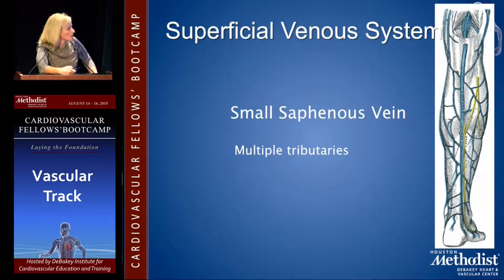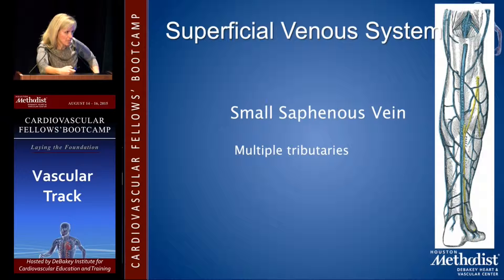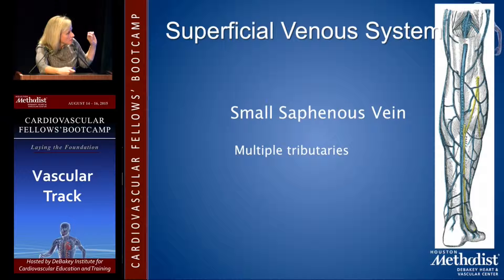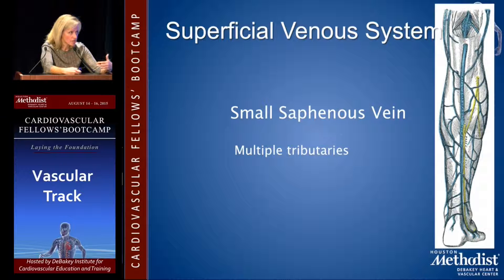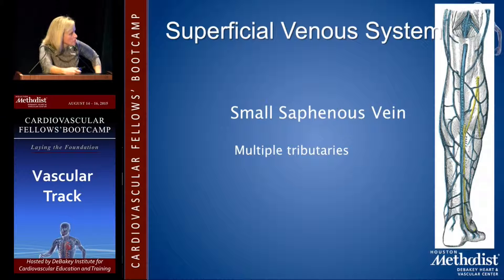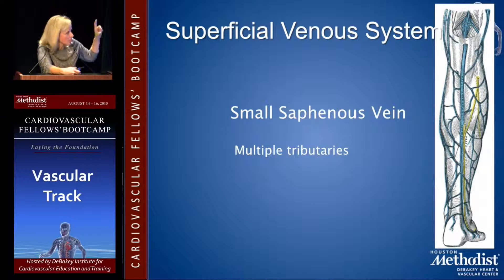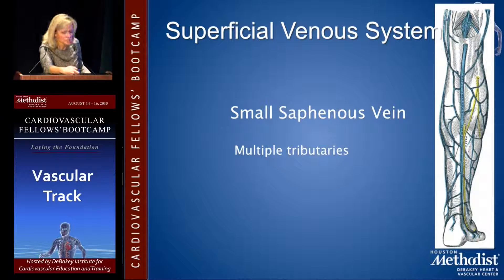The small saphenous vein starts lateral and posterior to the lateral malleolus and extends up the posterior aspect of the calf. For the first two-thirds of the calf, it runs with the sural nerve, then as it goes deep to penetrate the fascia it separates from the sural nerve. This is significant for treatment: when treating the small saphenous vein you must be careful not to injure the sural nerve. We usually treat the top third of the small saphenous vein, which is safely away from the sural nerve, resulting in less incidence of injury.